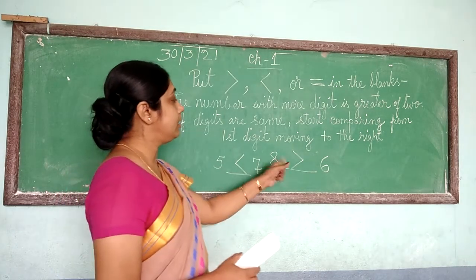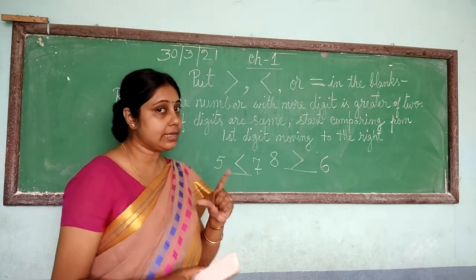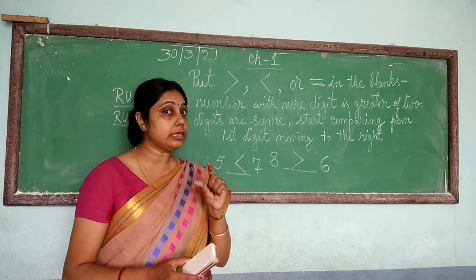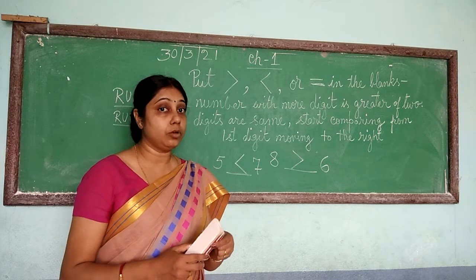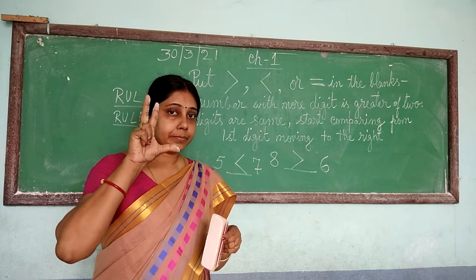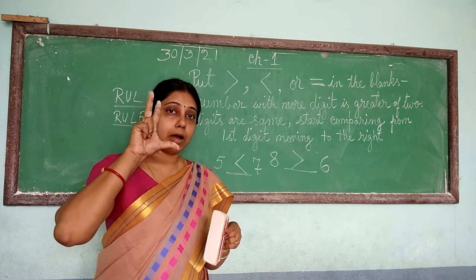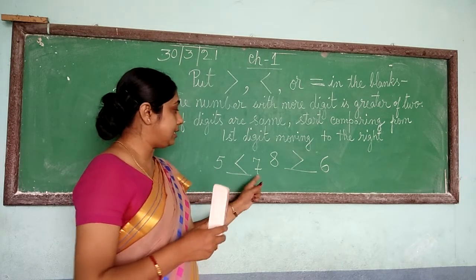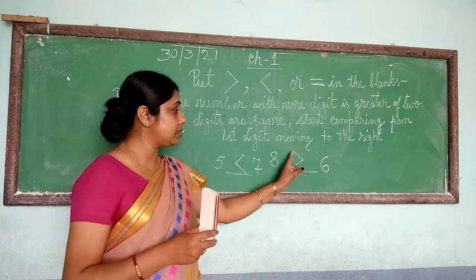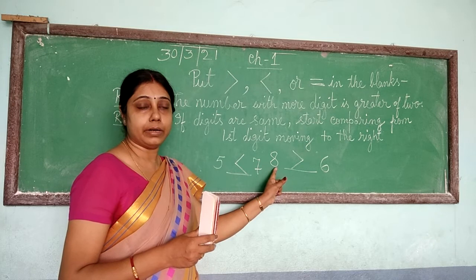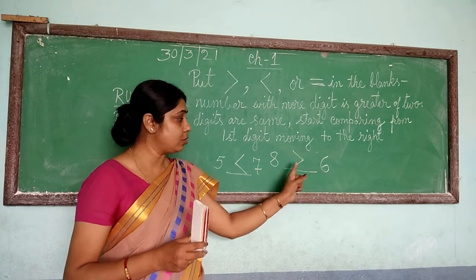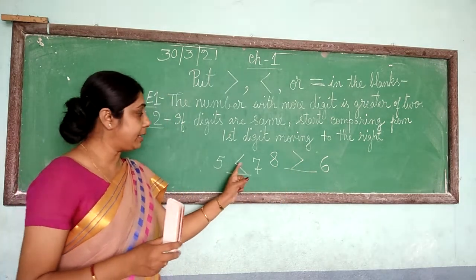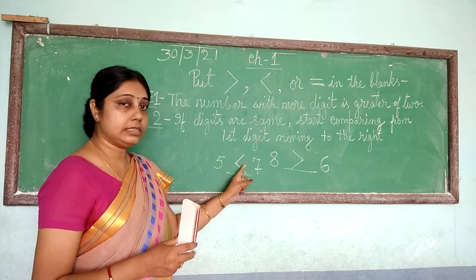How will you understand how to put this sign? Here is a very easy way. Have you seen a dog barking? When the dog barks, it keeps its mouth open — mouth open means it is becoming bigger. Similarly, whichever side has the bigger digit, you have to put the open sign facing that number. So here 8 is bigger than 6, so we keep the open sign facing 8. Here 7 is bigger than 5, so we keep the sign facing 7.